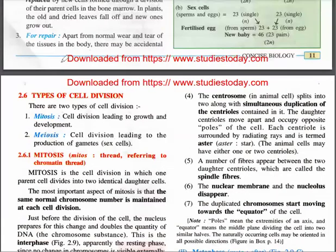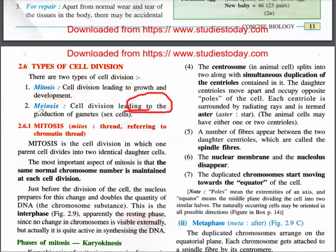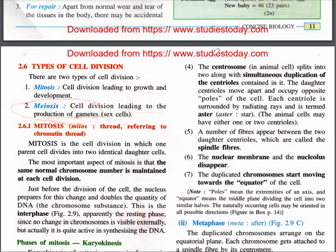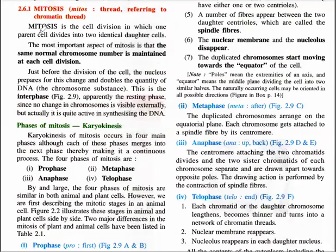There are two types of cell division: mitosis and meiosis. Mitosis leads to growth and development; meiosis leads to the production of gamete cells. Mitosis is a cell division in which one parent cell divides into two identical daughter cells.